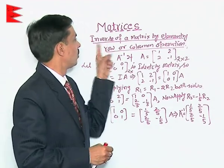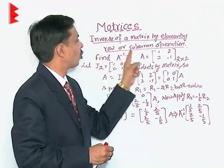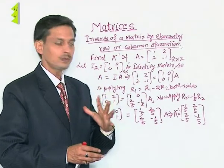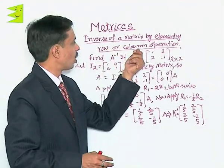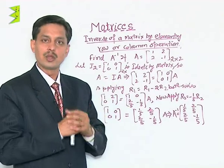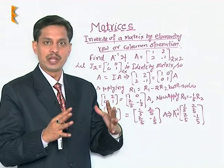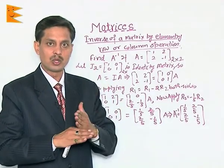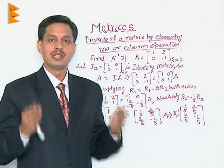The question is inverse of the matrix by elementary row or column operation. Only either row or only column operation are required. As and when we start operating either by rows then we follow the rows. If by columns then only by columns.